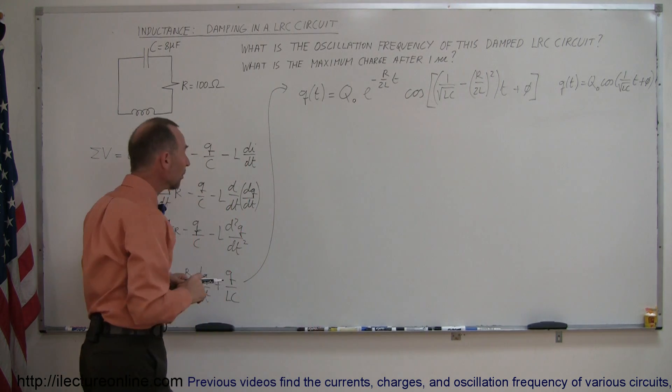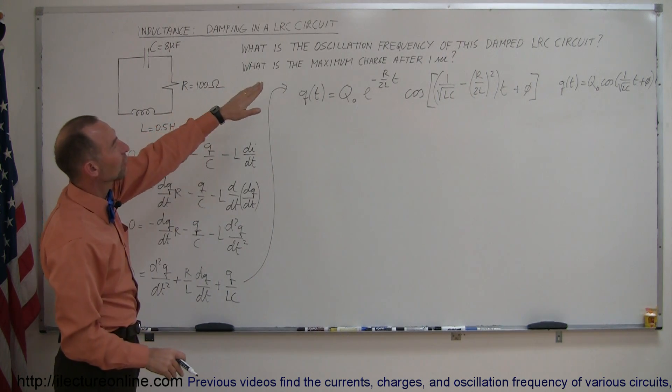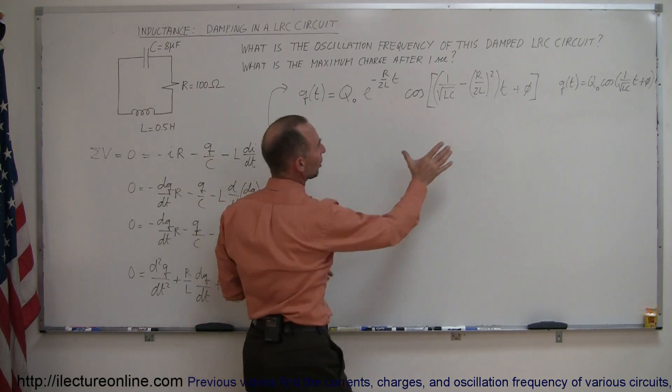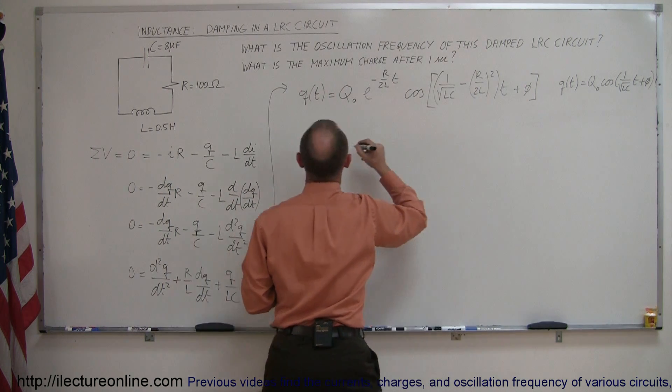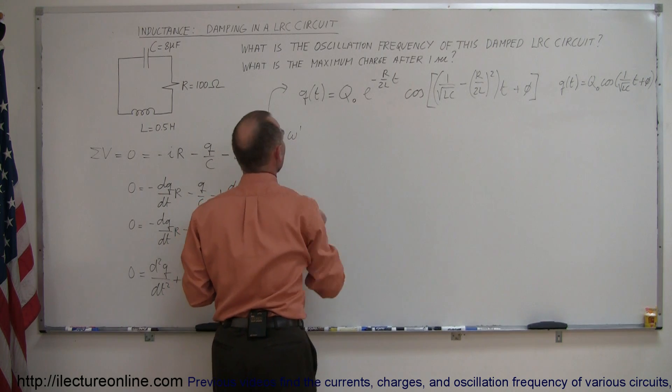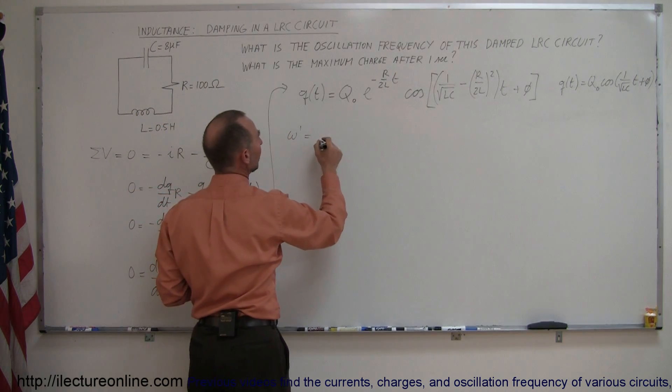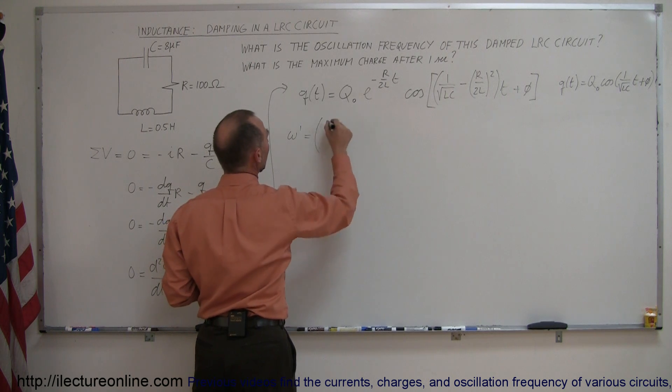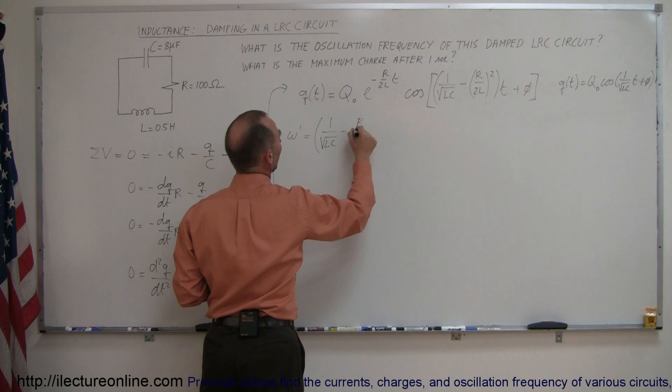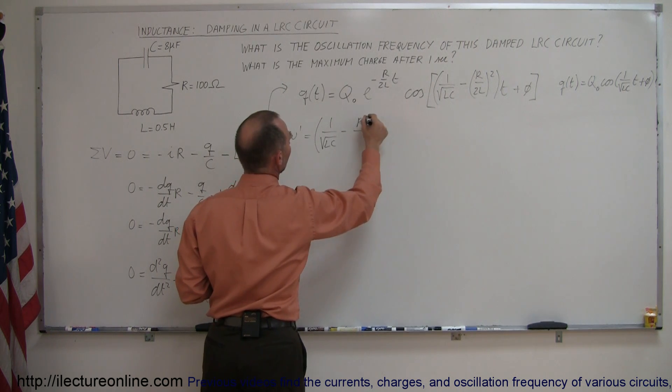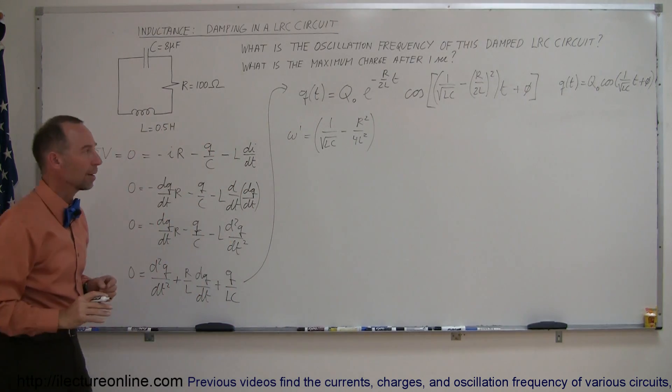So that doesn't look all that different than we did before. Now let's plug some numbers in there to get a feel for it because ultimately we're supposed to find the oscillation frequency of this damped LRC circuit which is this right here. So this thing right here is the new oscillation frequency so we call this ω prime. This is when we have a dampening factor in there. So ω prime is equal to 1 over the square root of LC minus R over 2L squared or we can write R² over 4L² like that. So that's our new ω prime.